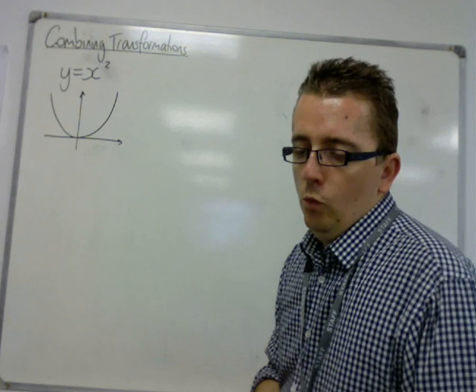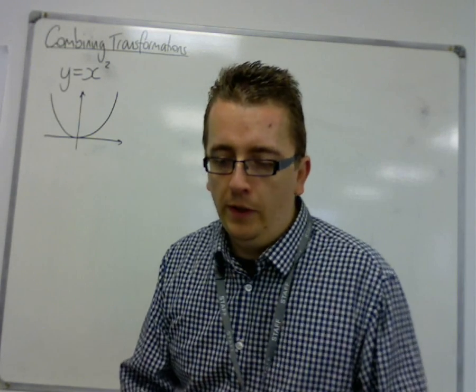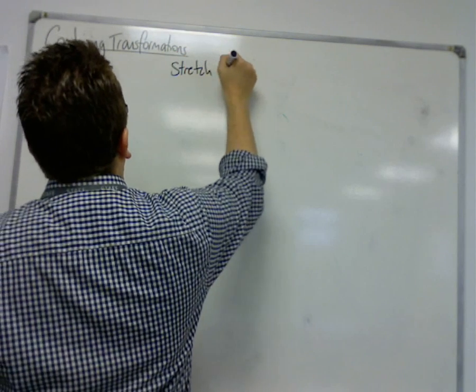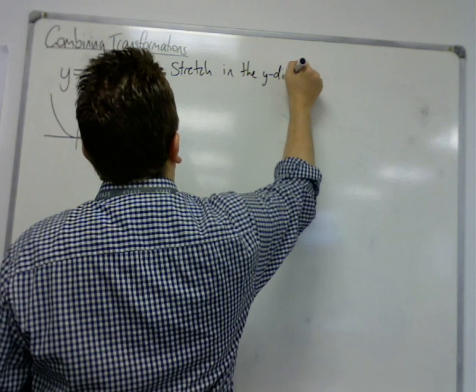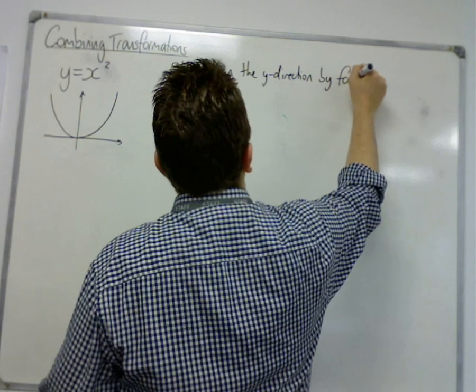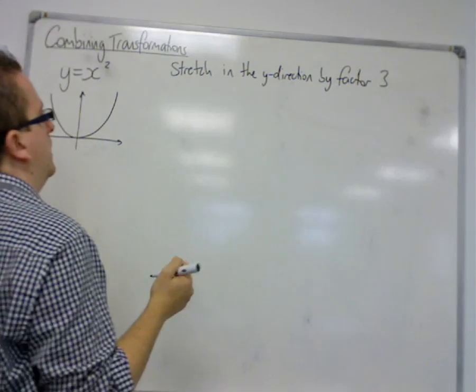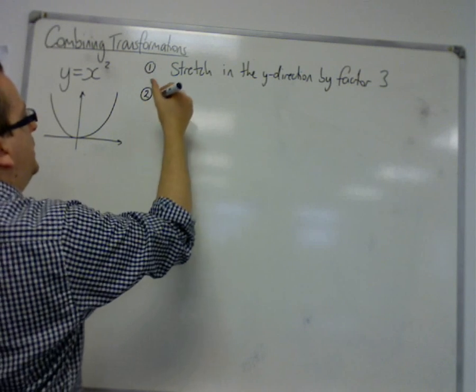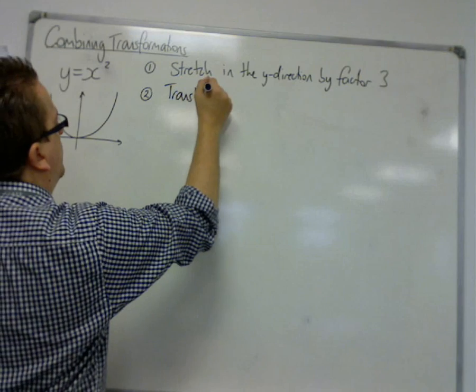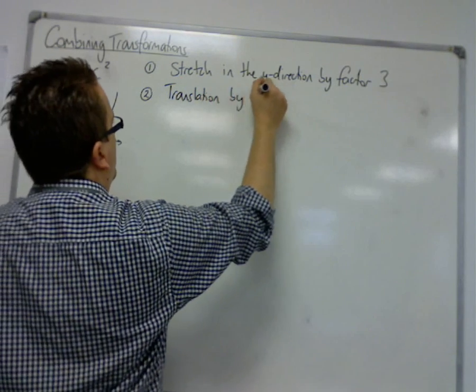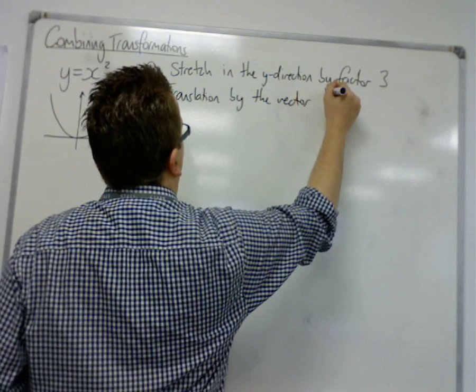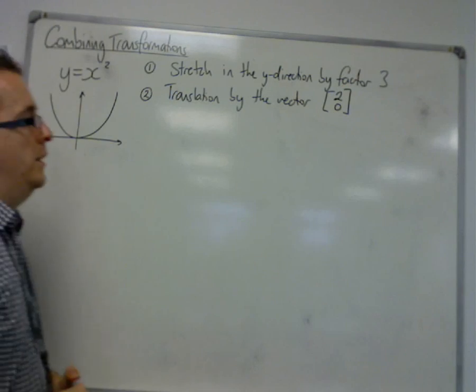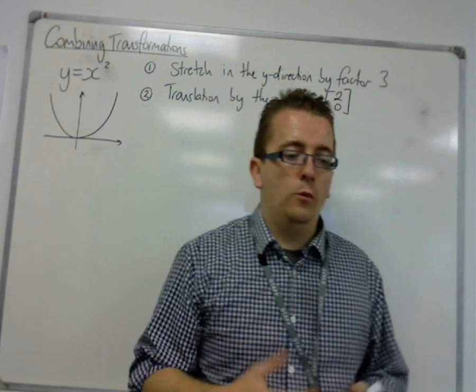Okay, so we're going to start off with two transformations. The first will be a stretch in the y direction by a factor of 3. And the other transformation is going to be a translation by the vector [2, 0]. So we're going to see exactly what happens to the graph when I do this.